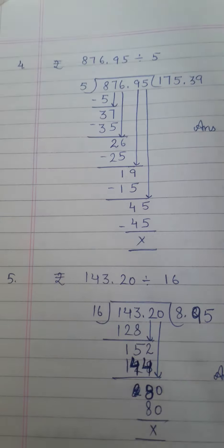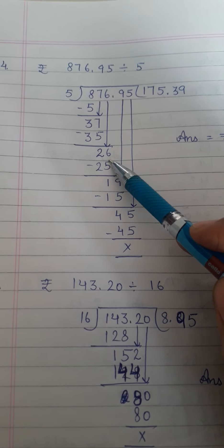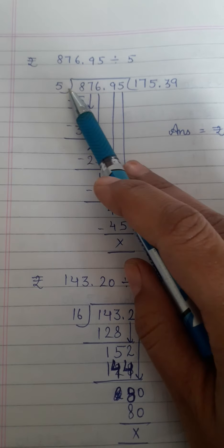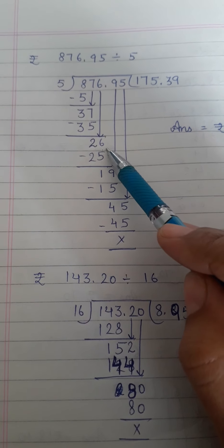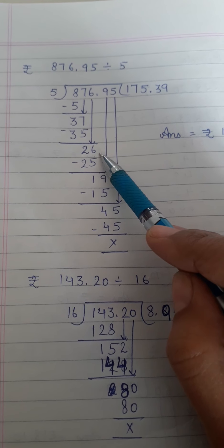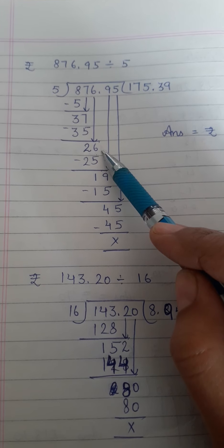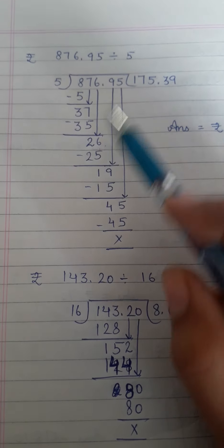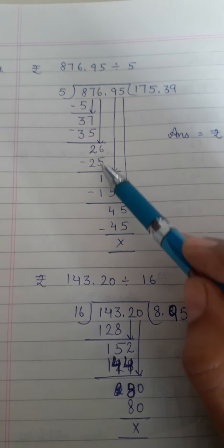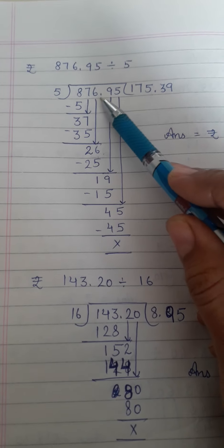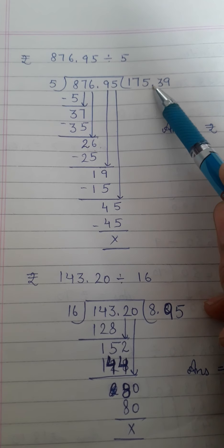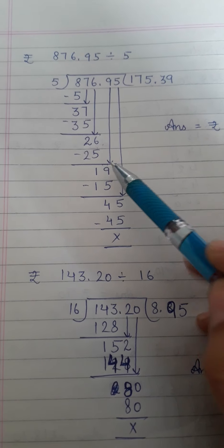Bring down 6 from top. Speak table of 5. 5 ones are 5, 5 twos are 10, 5 threes are 15, 5 fours are 20, 5 fives are 25, 5 sixes are 30. 30 is bigger than 26. So 5 fives are 25 will go. 26 minus 25 is 1. Decimal comes now. So first put decimal in the question. Then bring down 9.